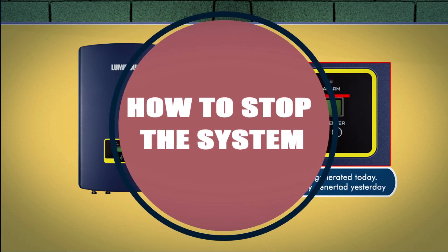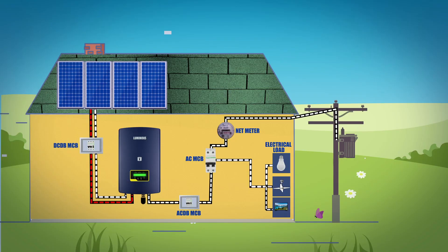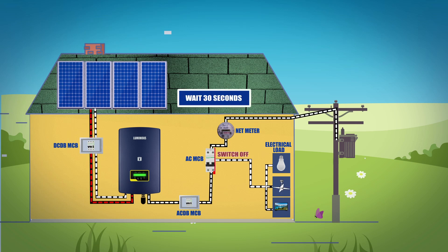To stop the inverter, the following steps must be strictly followed. Switch off the main supply. Wait 30 seconds. Switch off the DC MCB. All the LEDs of the inverter will be OFF in a minute.